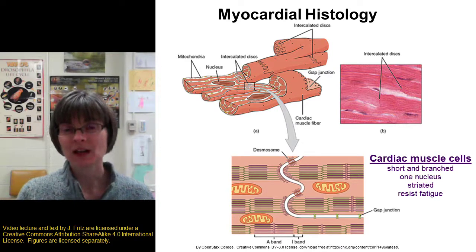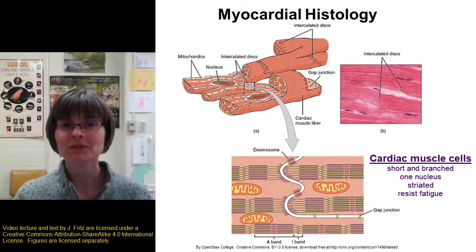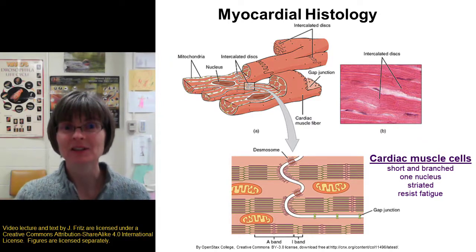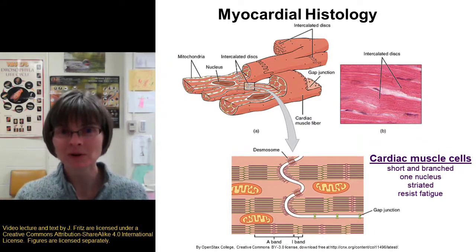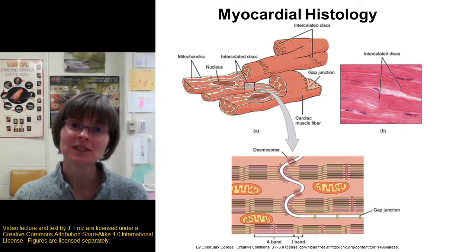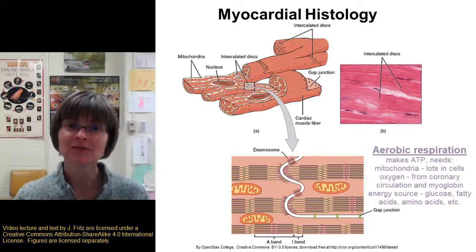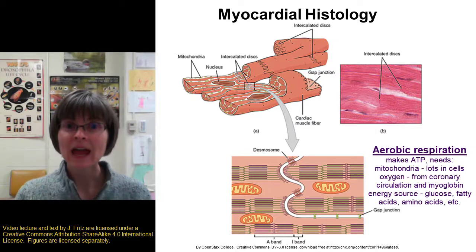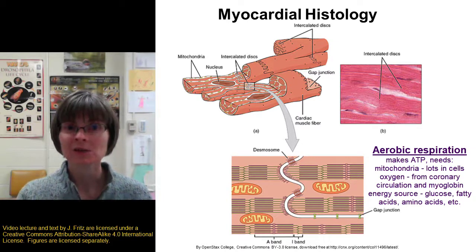One thing that's very important about the cardiac muscle is that it is very, very resistant to fatigue, because your heart has to beat every second of every minute of every hour of every day of your life — you don't want it to fatigue and wear out. In order to resist fatigue, your heart muscle depends very heavily on aerobic respiration, which is the process that makes ATP using oxygen, mitochondria, and an energy source.